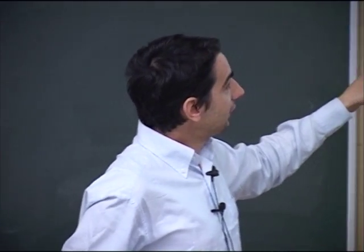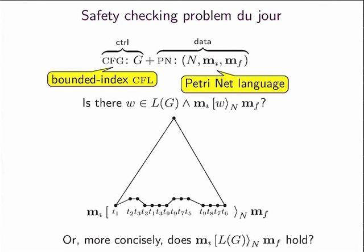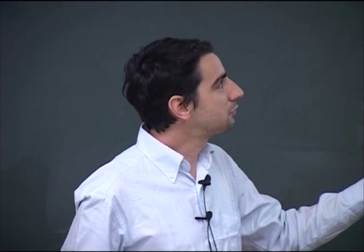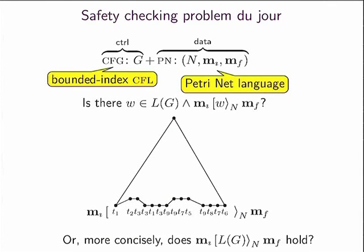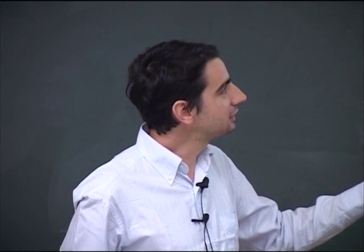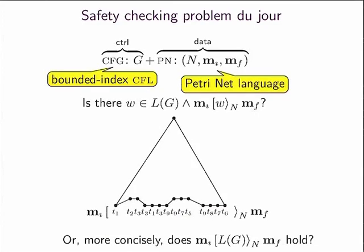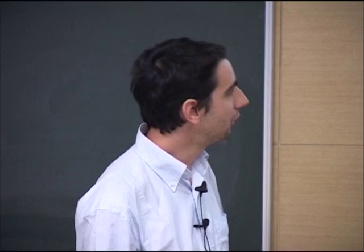Now let's get into the details. Some notation: for the context-free language, I will not use the pushdown automaton — I will use context-free grammar instead, specifically a context-free grammar that generates bounded-index context-free language, which I will define in a minute. For the data, we have a Petri net with two markings: an initial and a final one. The question we are asking is whether there is some word in the bounded-index context-free language — a sequence of transitions — that brings us from the initial marking to the final one.